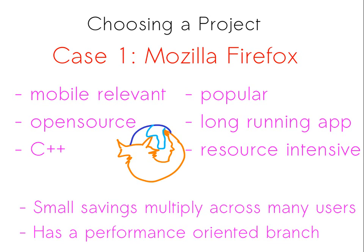Concretely, in case one we chose Mozilla Firefox. We chose Firefox because it's popular, people use it, it's mobile relevant - you can download Fennec for your phone right now. It's resource intensive and long running - you leave it running on your phone and on your desktop, so it's always running and often idle. And because it's so popular, if you have any kind of savings at all, it multiplies across the entire user base. Small savings in Firefox can lead to very large aggregate savings.